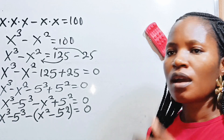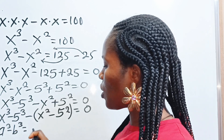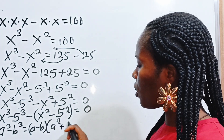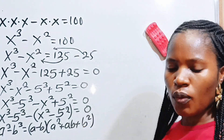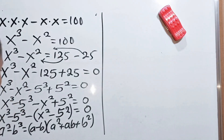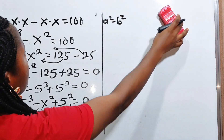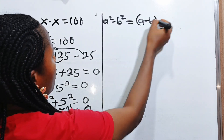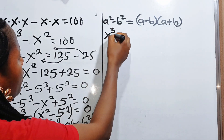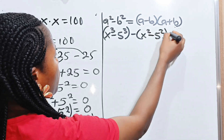Now recall that A to the power of 3 minus B to the power of 3 equals A minus B, multiplied by A squared plus AB plus B squared. And also A squared minus B squared equals A minus B, multiplied by A plus B. So we have x to the power of 3 minus 5 to the power of 3, minus x to the power of 2 minus 5 to the power of 2, equals 0.